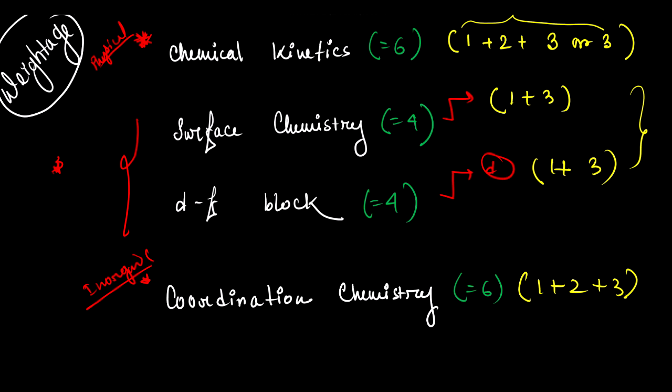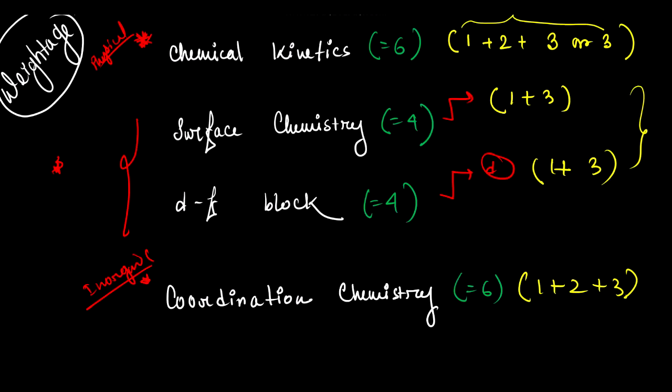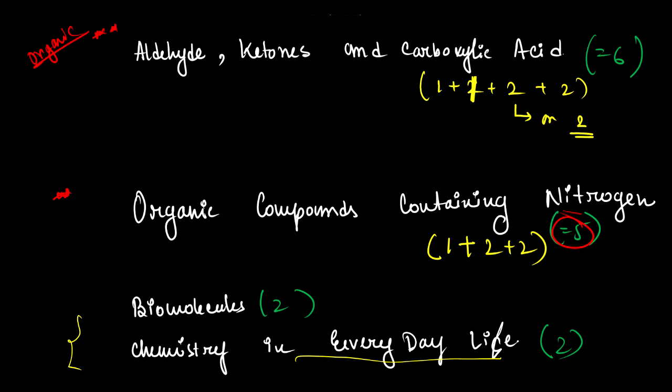This is the overall idea. This is the time for revision — I already published a schedule, so follow it. When revising, revise the most important chapters first, then moderately important ones, and lastly the less important ones. If you are starting a new chapter like Chemistry in Everyday Life or Surface Chemistry, read the new chapter two or three times first, then start revising the important chapters — first organic, then Chemical Kinetics or Coordination Chemistry, then Surface Chemistry and D&F Block.